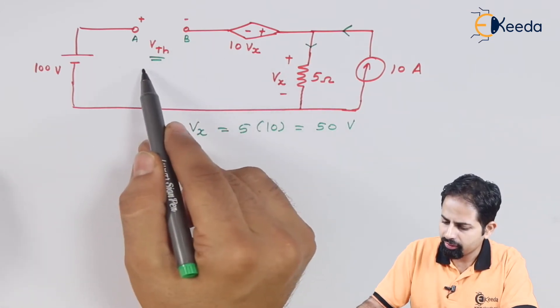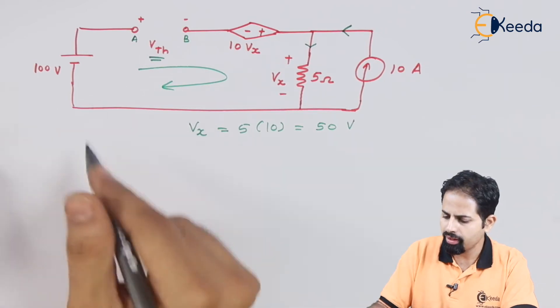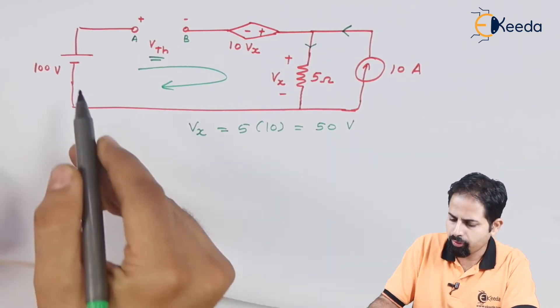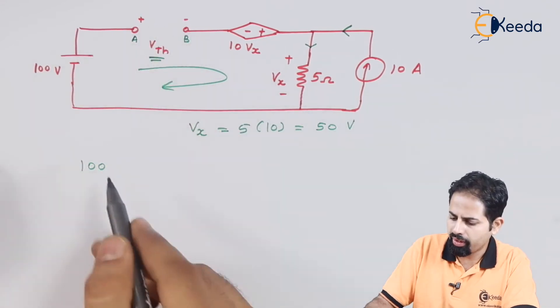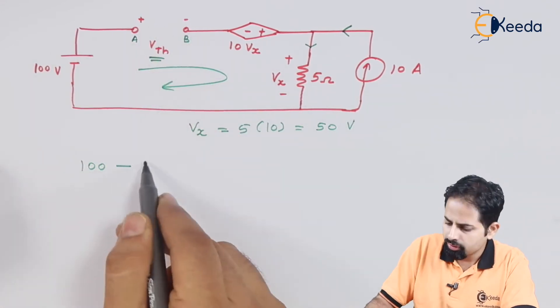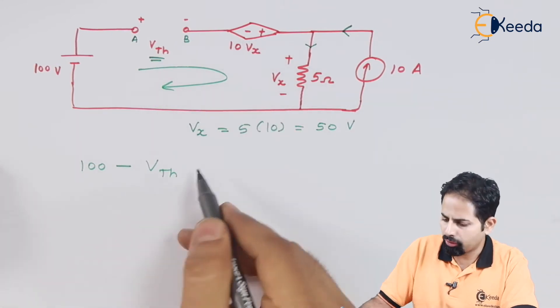And now if we apply KVL here like this, then what we can write is 100 because we are going from negative to positive. Then positive to negative will be negative.